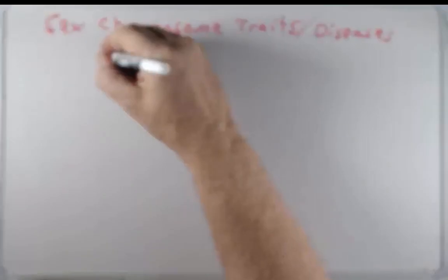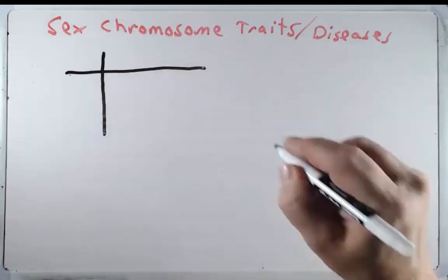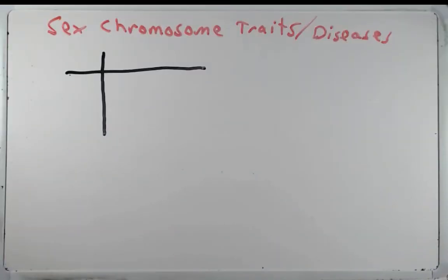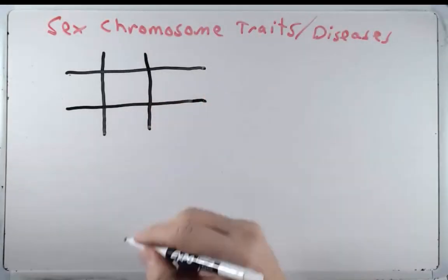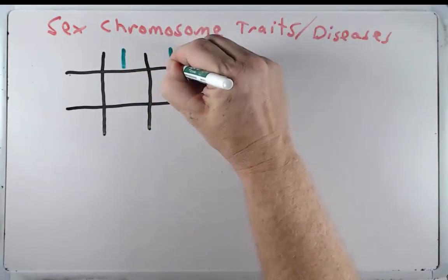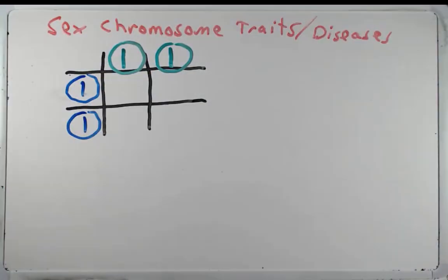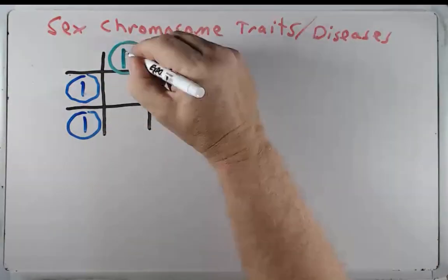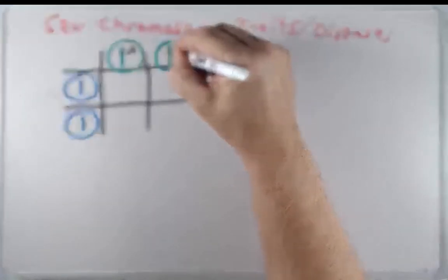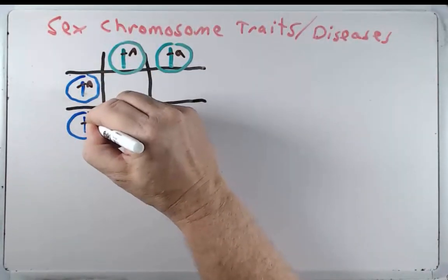Up to this point most of the traits we've talked about and most of the inheritance we've talked about have dealt with genes on autosomes — that is the chromosomes that are not X or Y. The Punnett squares were pretty straightforward. You might have two gametes from one parent and two gametes from another parent, looking at a specific gene: big A, little a, big A, little a.